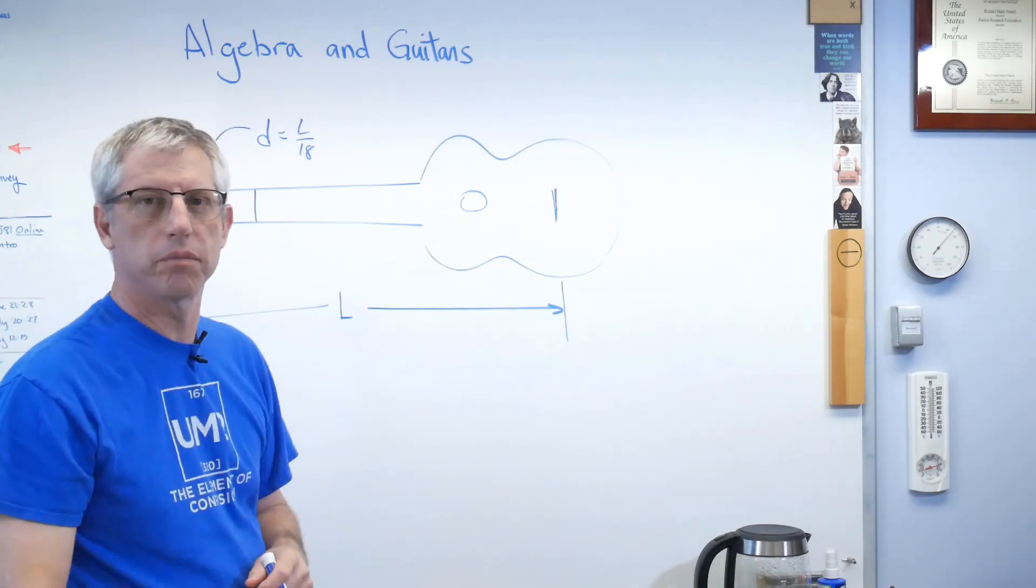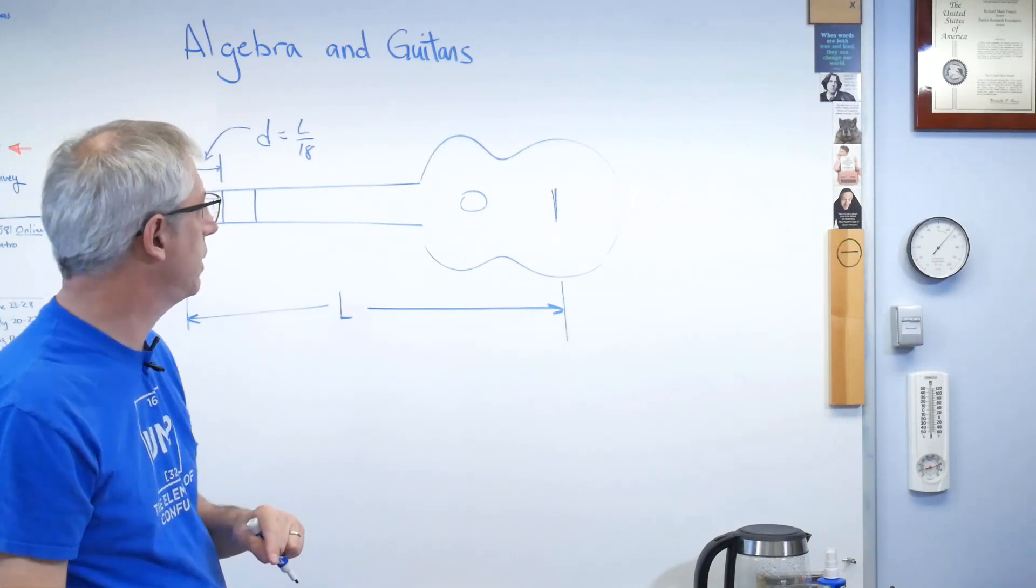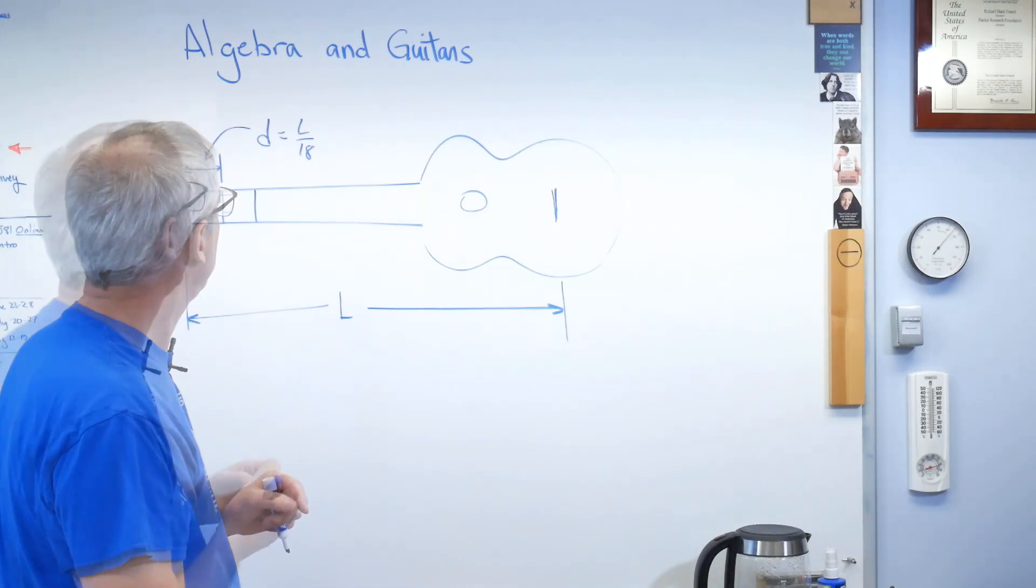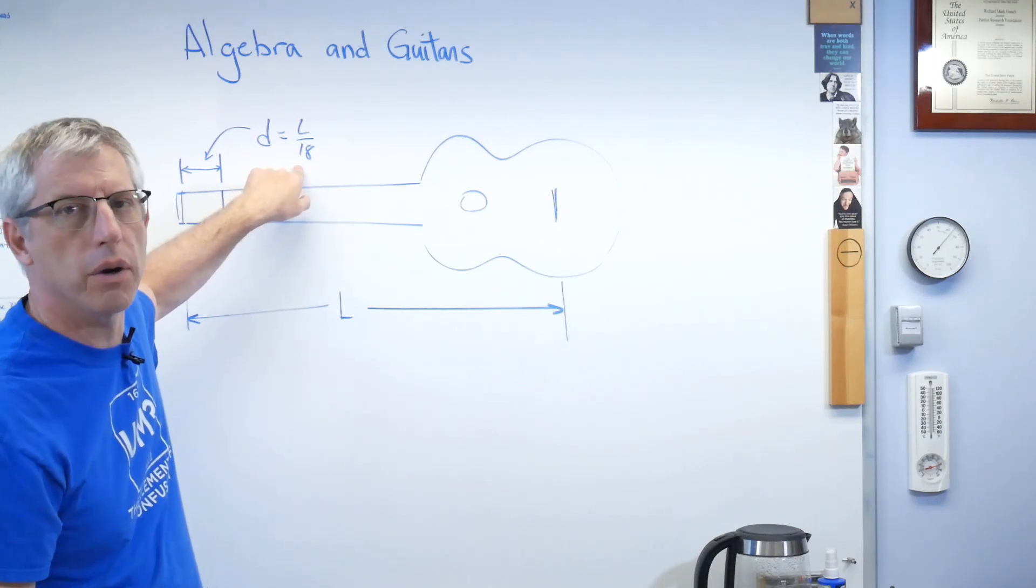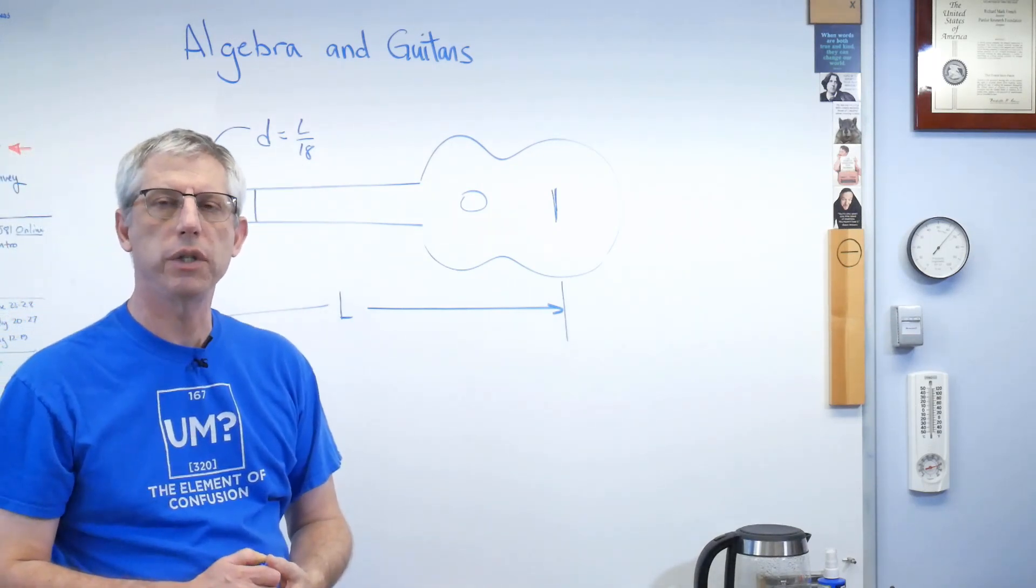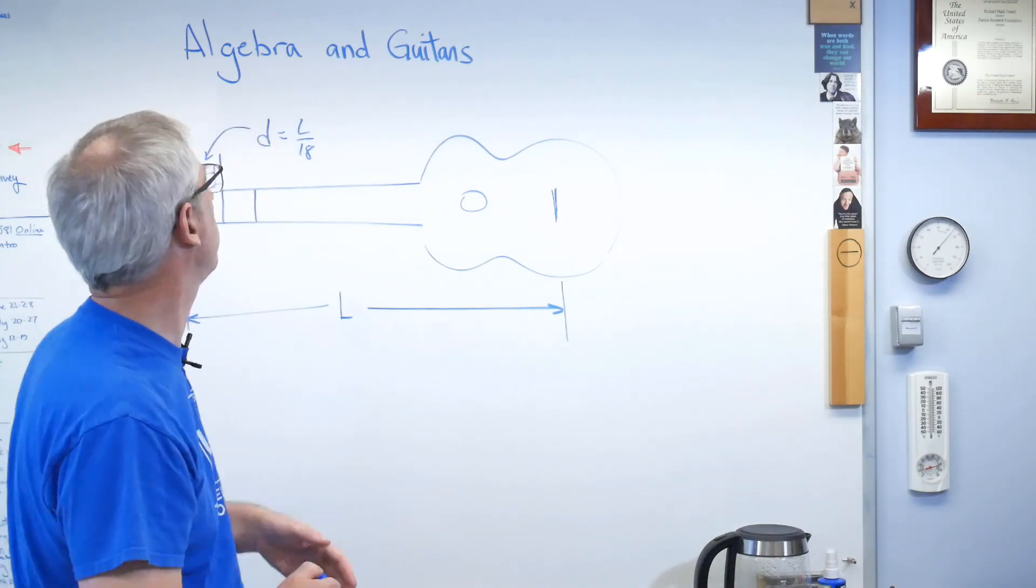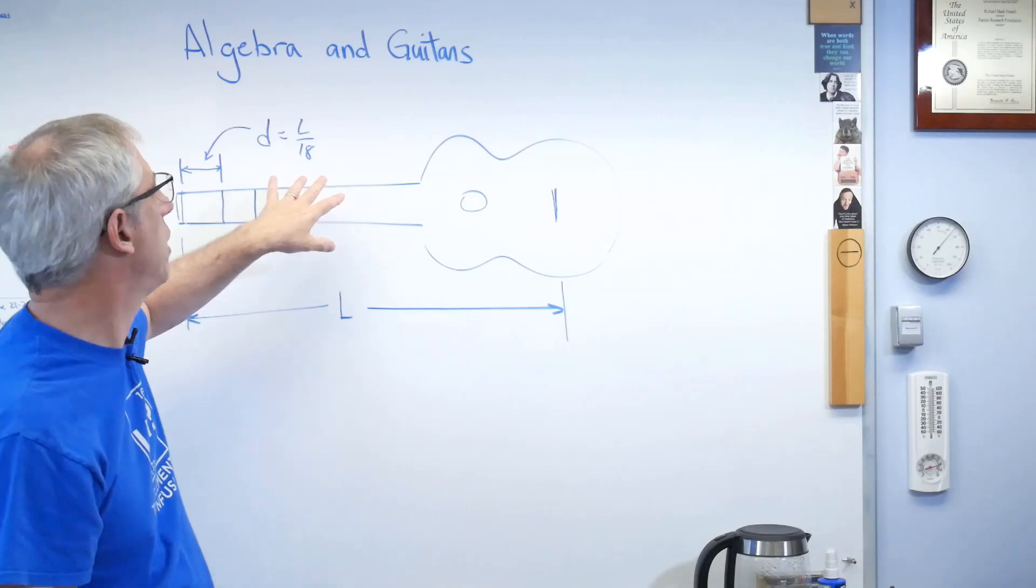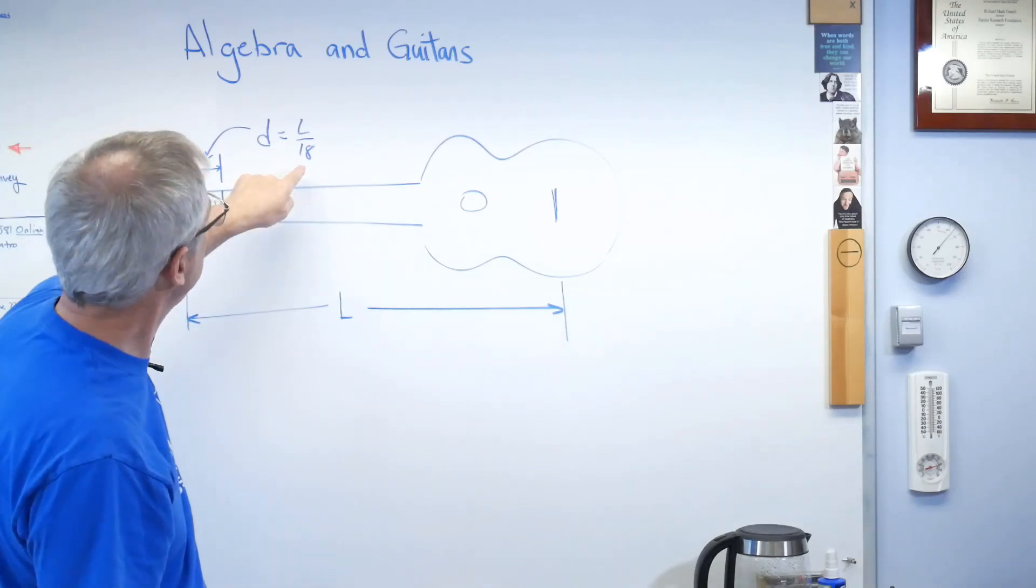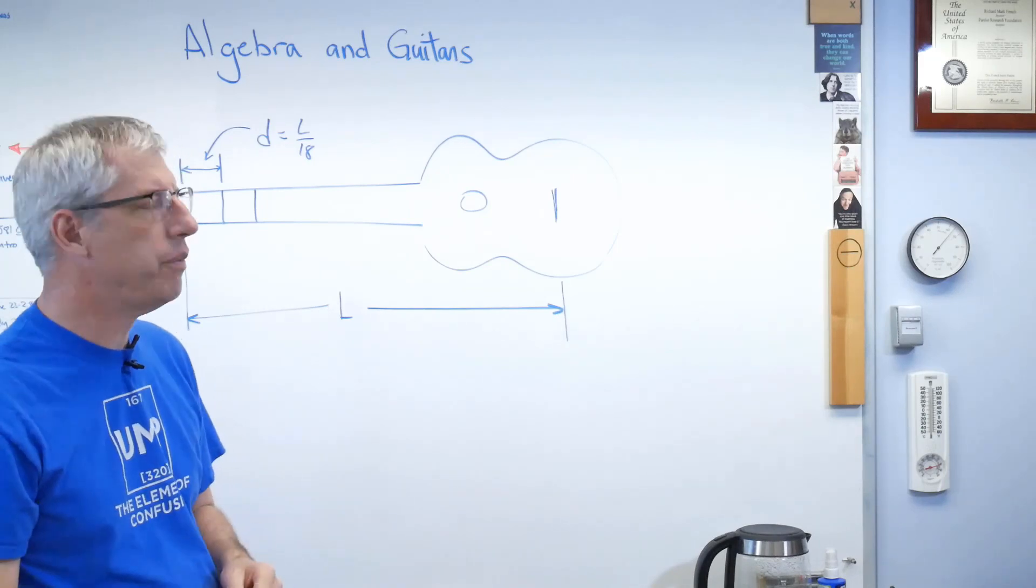Well, that works, sort of. Turns out the right number isn't really 18. It's like 17.813, or something like that. This may have been empirical. Turns out one of the first people to write this down was Vincenzo Galilei, the father of Galileo Galilei. And there was a lot of drama and stuff around this. So, this works, sort of. The right number is 17.813.